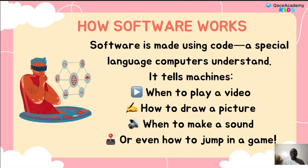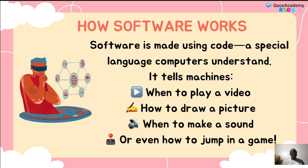How software works: software is made using code, a special language that computers understand. It tells the machine when to play a video, how to draw a picture, when to make a sound, or even how to jump in a game.